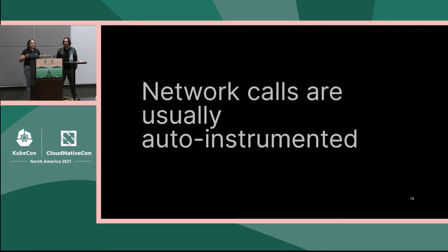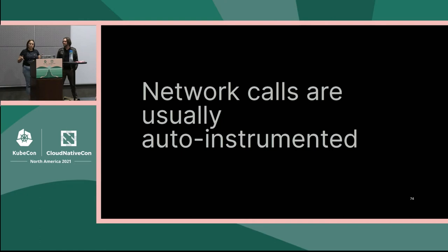The other layer of instrumentation is outgoing network calls. In libraries, you usually don't want to instrument these because it's supported by auto-instrumentation. The key thing is that your public API call should be correlated with the underlying network call so users can see the full picture. Having those two basic layers helps users understand the flow without asking for your support — they can see how their library communicated with the service, spot retries or long calls, and file better issues with more context.